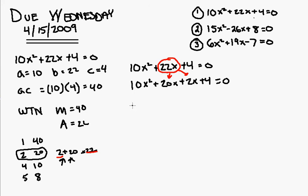Now I'm going to group those, so I'm going to go 10x squared plus 20x plus 2x plus 4 equals 0. Now that I've grouped them...